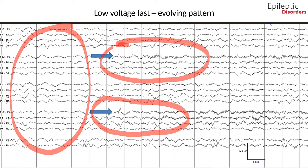This is also known as the onset of the seizure—the first unequivocal ictal electrographic onset—depicted by the blue arrows. Towards the end of the page, you can see how the seizure evolves with low-voltage fast activity becoming more apparent and pronounced in the FP2 and F4 regions.